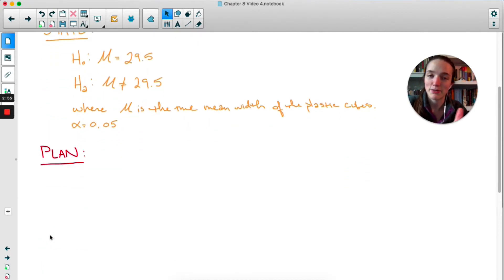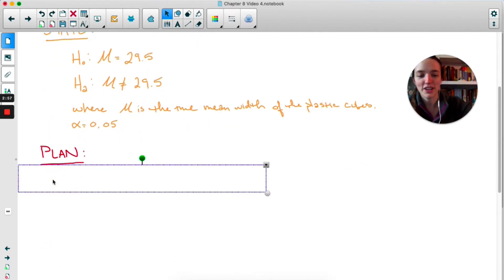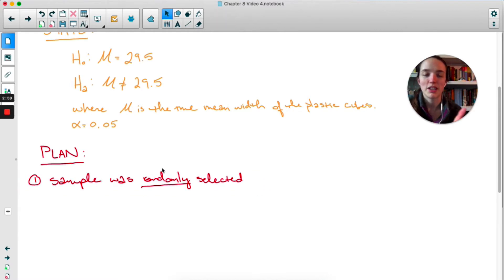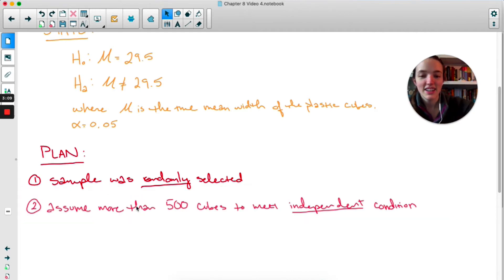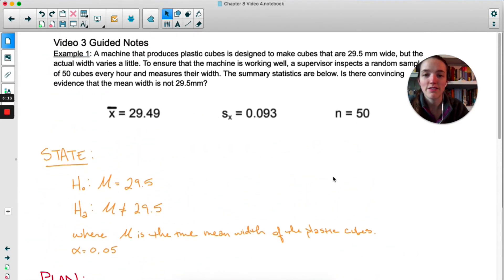Okay, the plan step is going to seem very familiar. We start out by saying the sample was randomly selected. That means we'll be able to generalize to the population of all cubes, which is the whole point of doing this significance test, so that's good. Next, we have to check the independent condition. We can assume that there's more than 500 cubes being made in an hour.